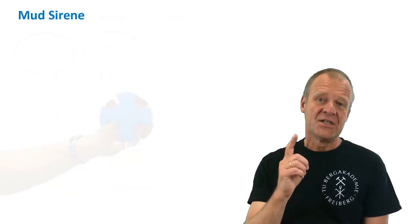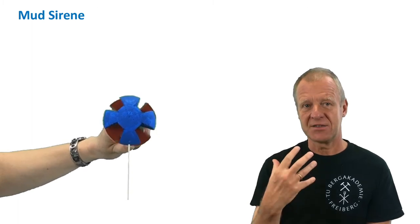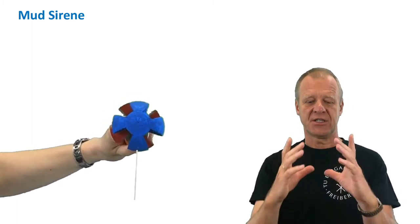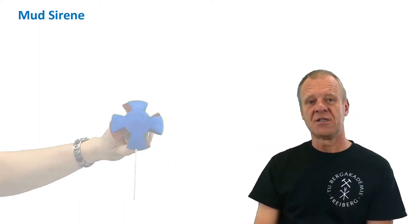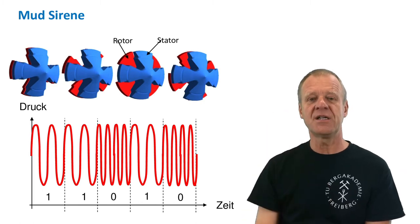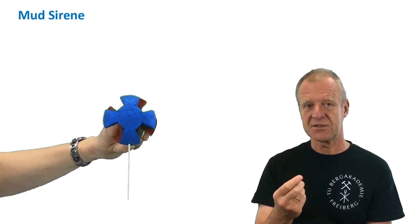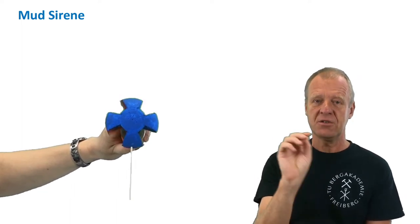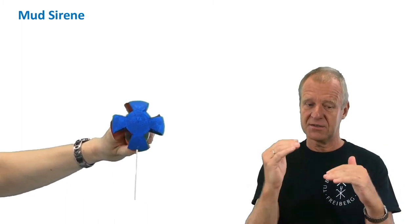A mud siren has two major parts: a slotted rotor and a slotted stator. The stator stands still and the rotor rotates behind the stator. Due to this rotation, the cross-sectional flow area of the drilling mud is continuously changed, and this creates a sine wave in the drill string — a tone, if you like. If we have the rotor rotate at different speeds, we can generate higher or lower tones, and with this we can transmit zeros and ones — higher tones and lower tones — to the surface.